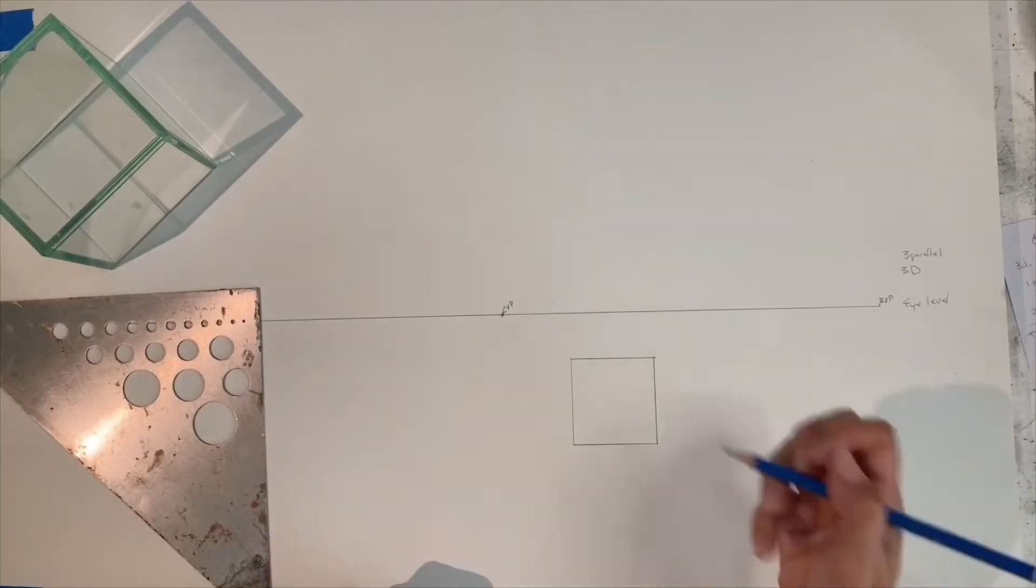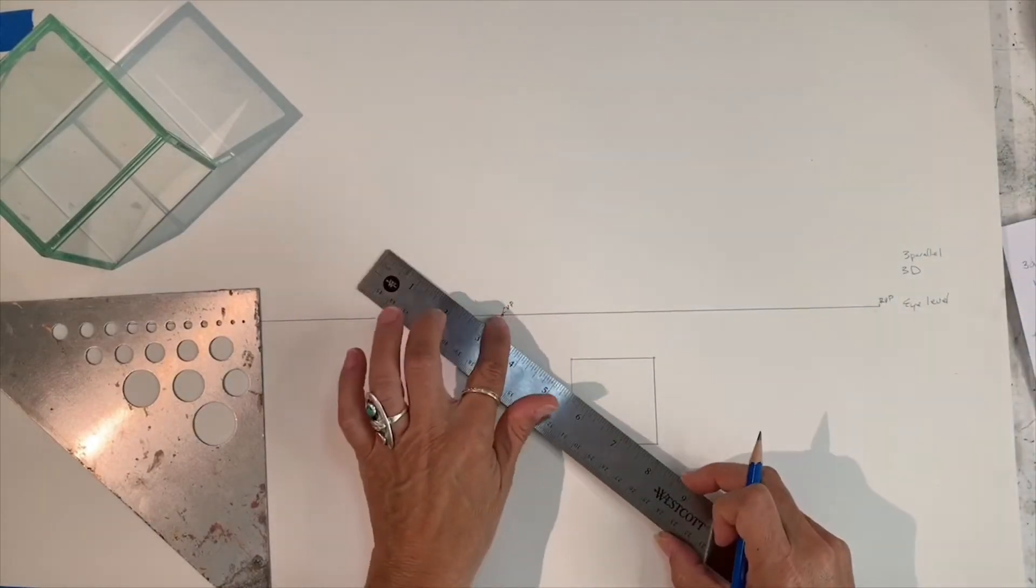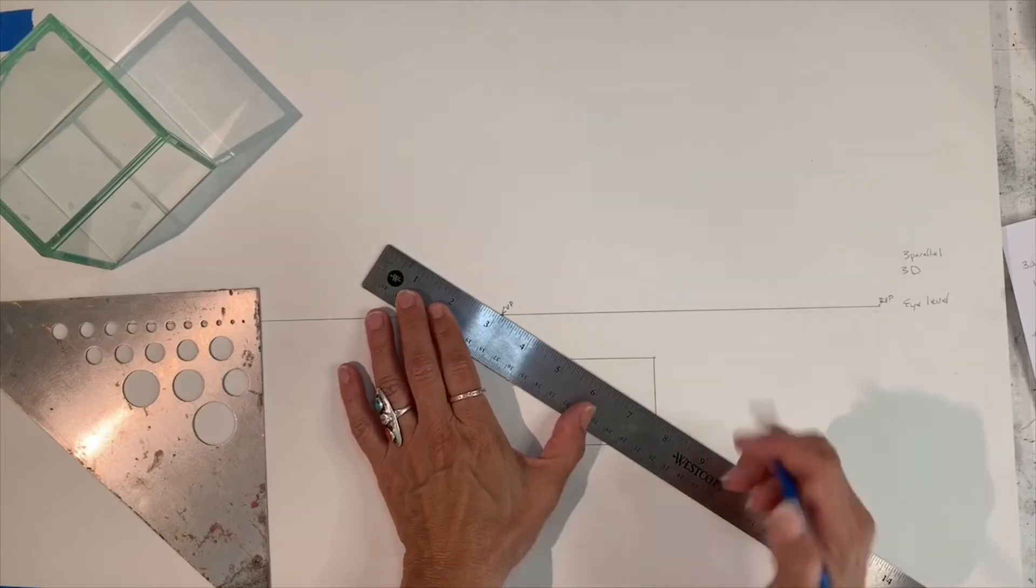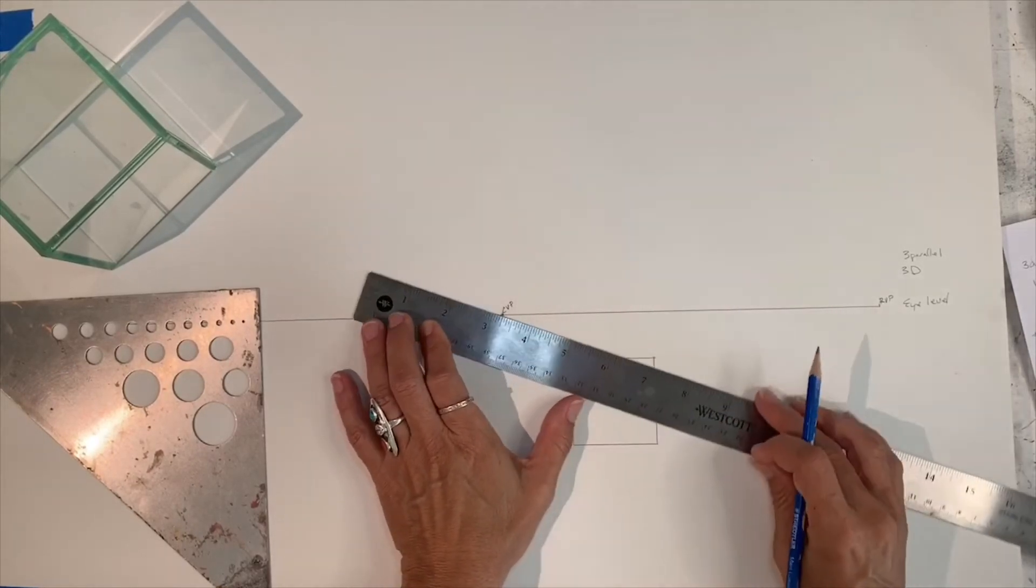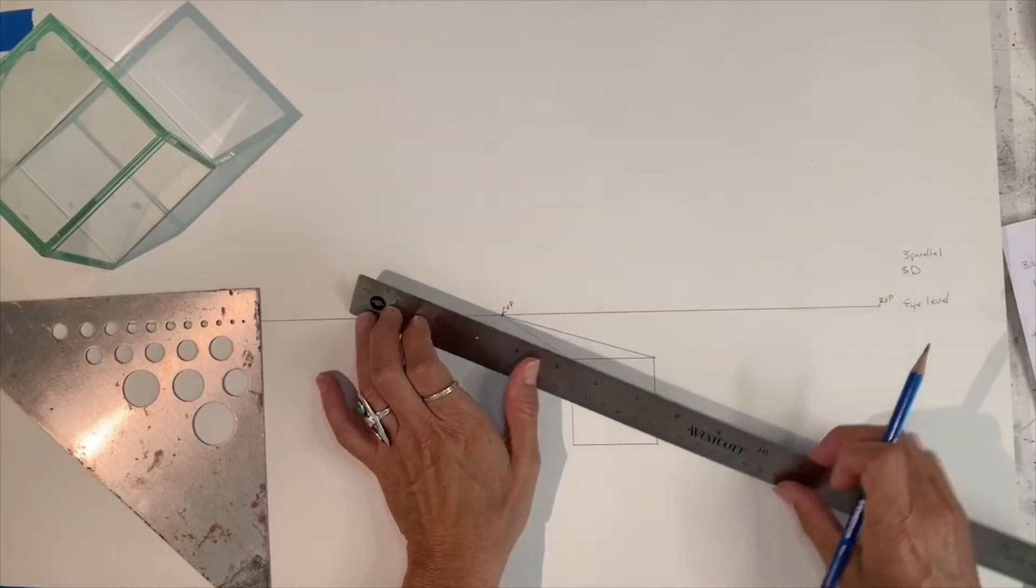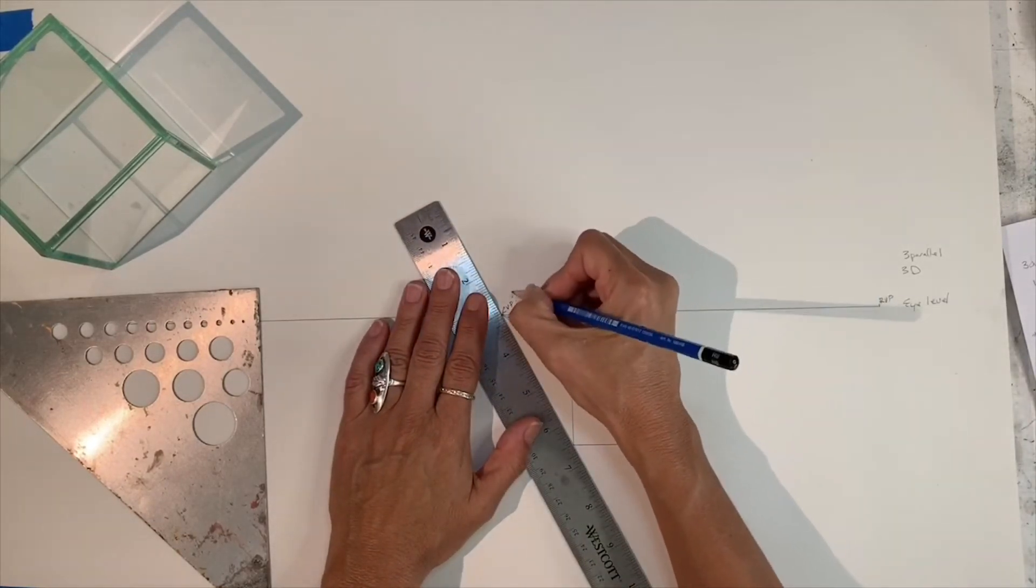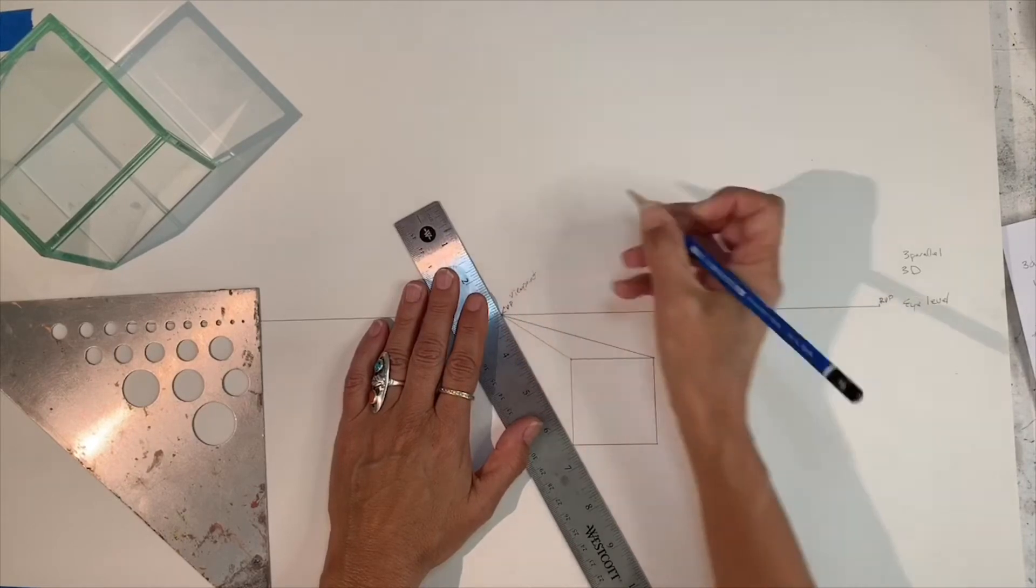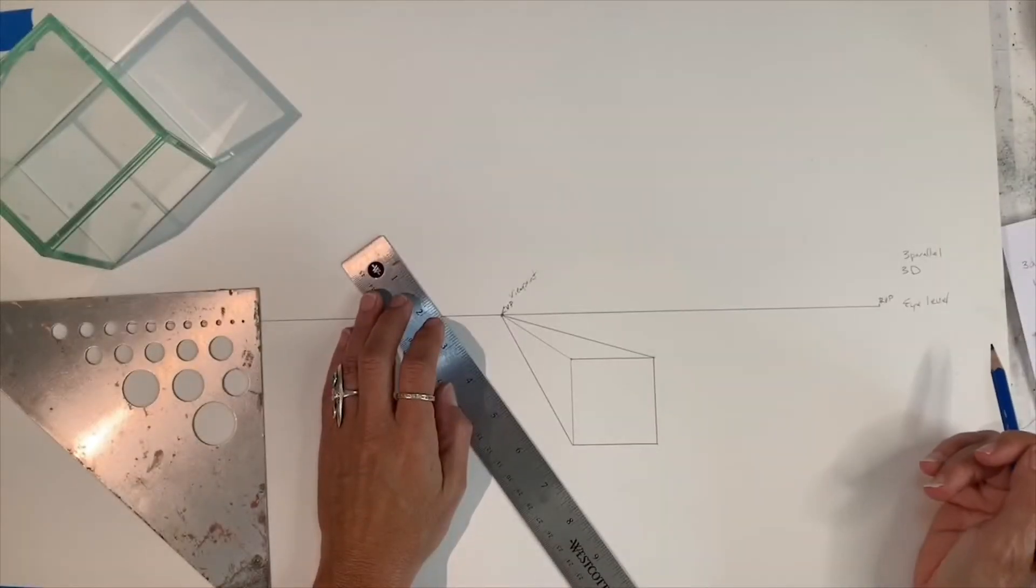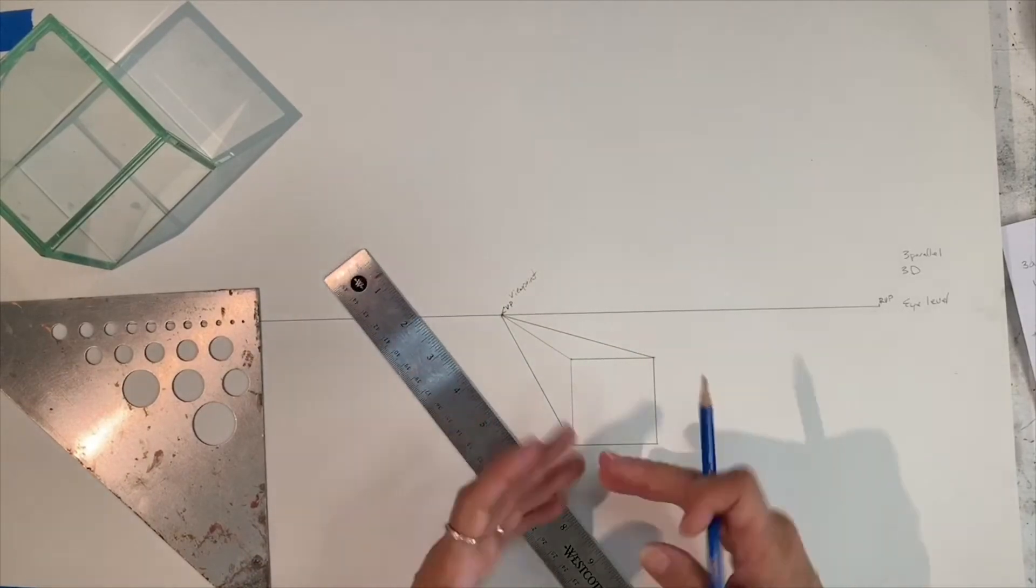So your next move is from all four corners, using your ruler, go to your central vanishing point. So these are the depth of your cube. And as things move kind of to the side, if they're to the right of a central vanishing point or your viewpoint, you will see the left side. If it's on the other side, then you would see the other side. So that's the start of it.